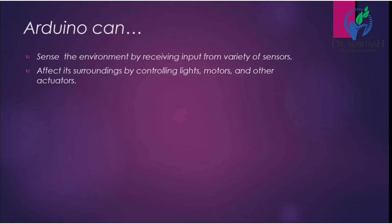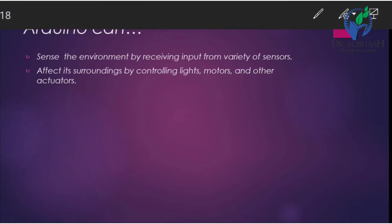This type of thing we can do with Arduino. It affects its surroundings by controlling lights, motors, and other actuators. An actuator is the reverse of a sensor — the actuator takes an electrical signal as input and gives displacement, pressure, or other physical output. A sensor senses temperature or displacement and gives an electrical signal. Sensor and actuator are two critical components of any control system.